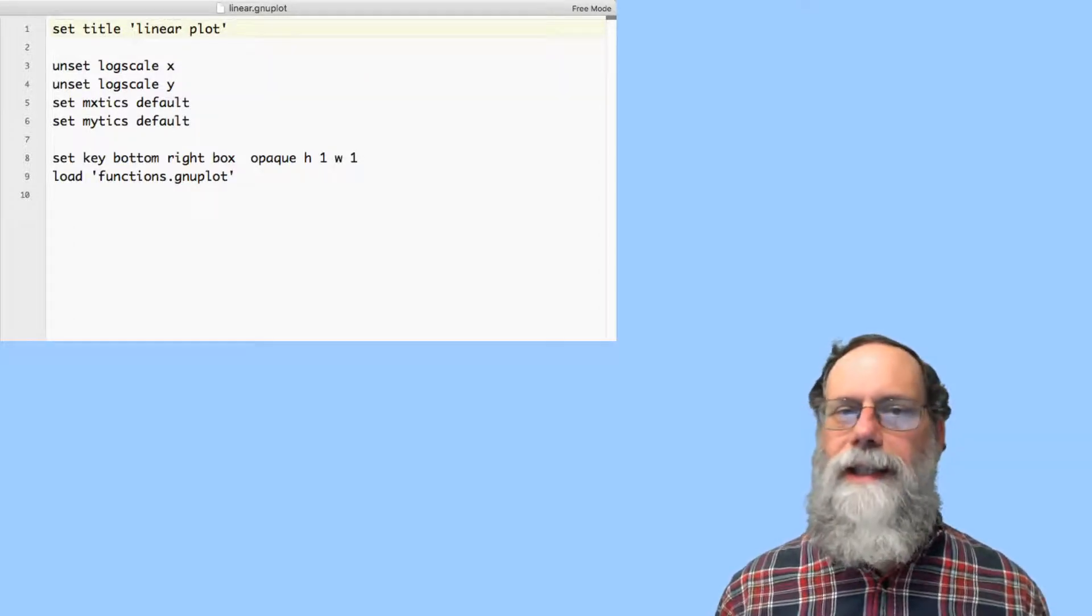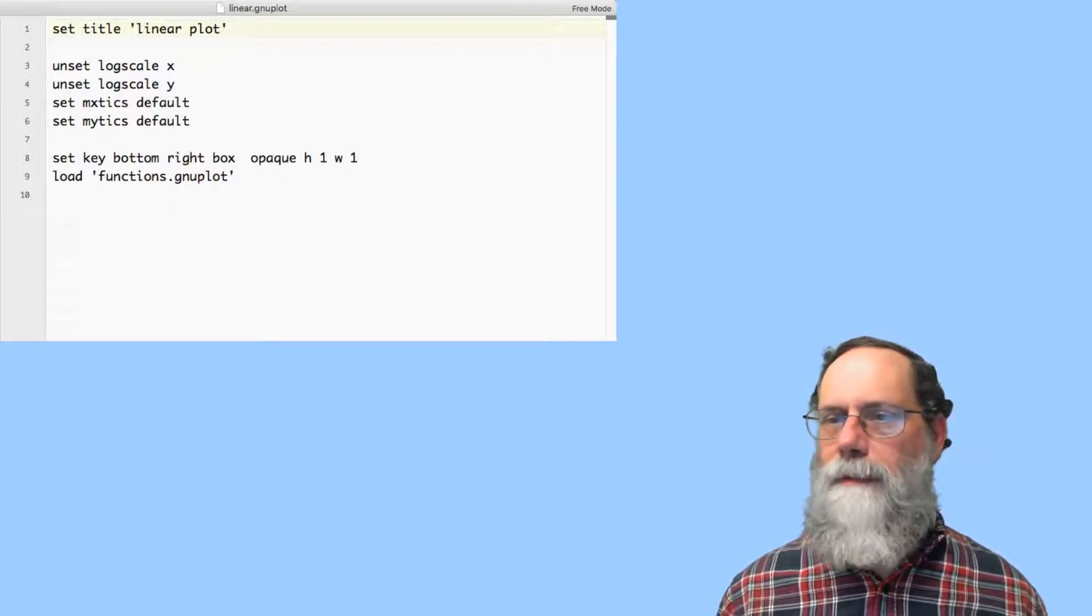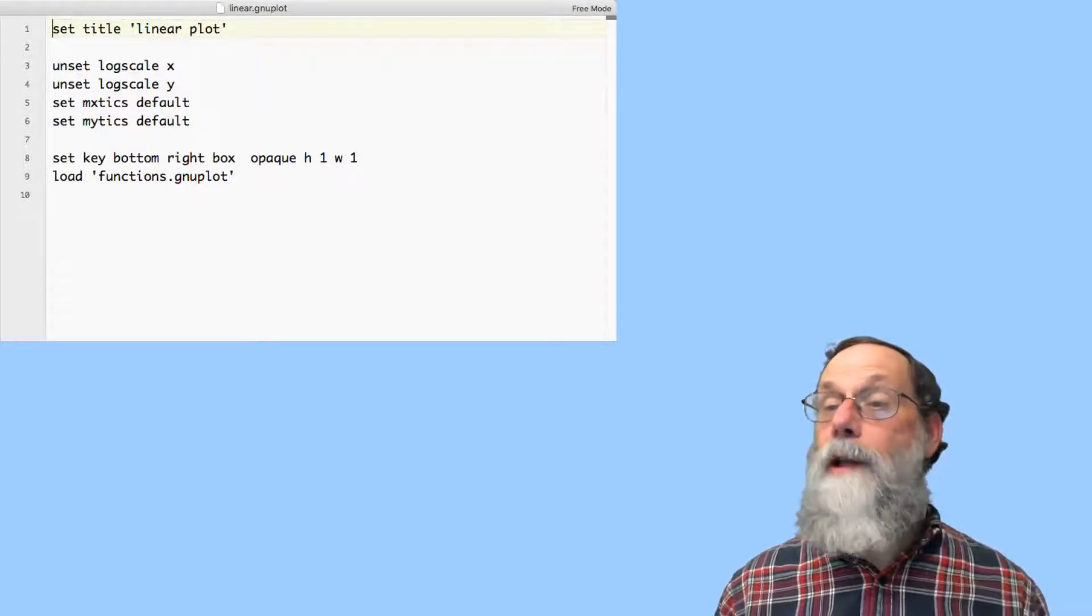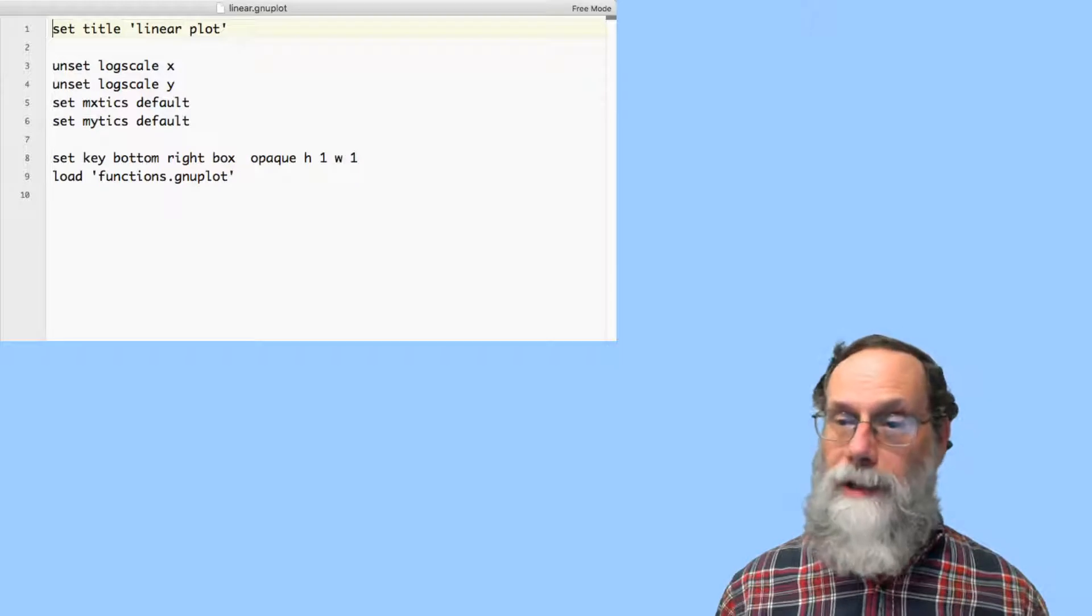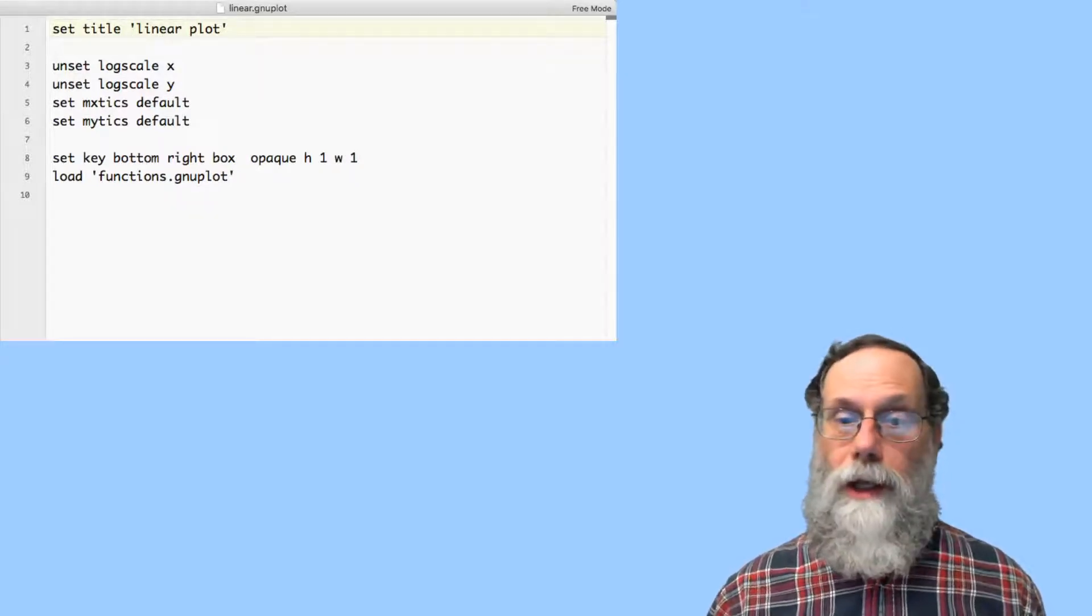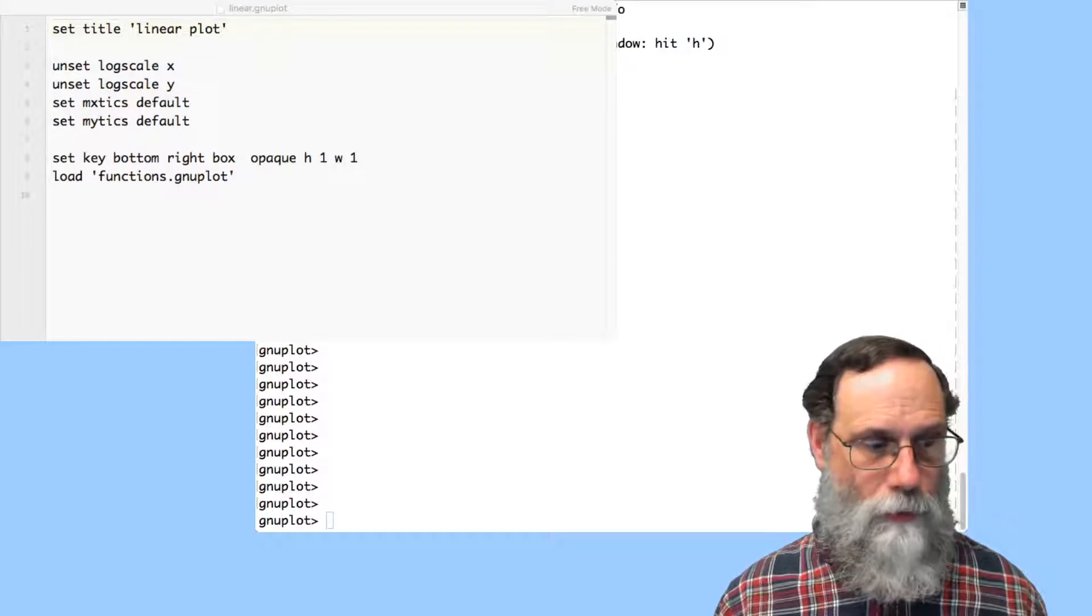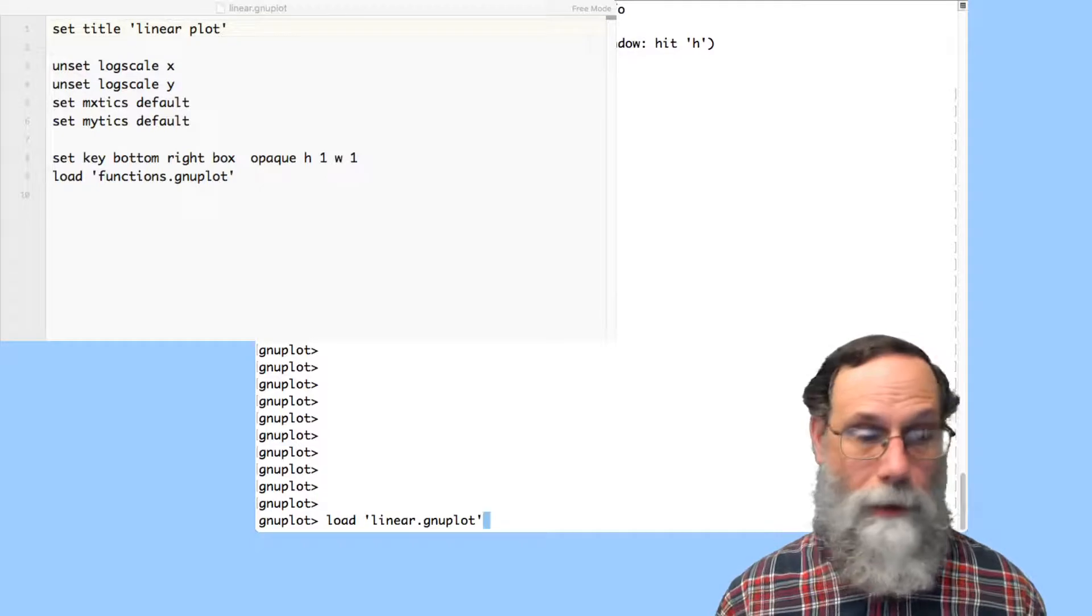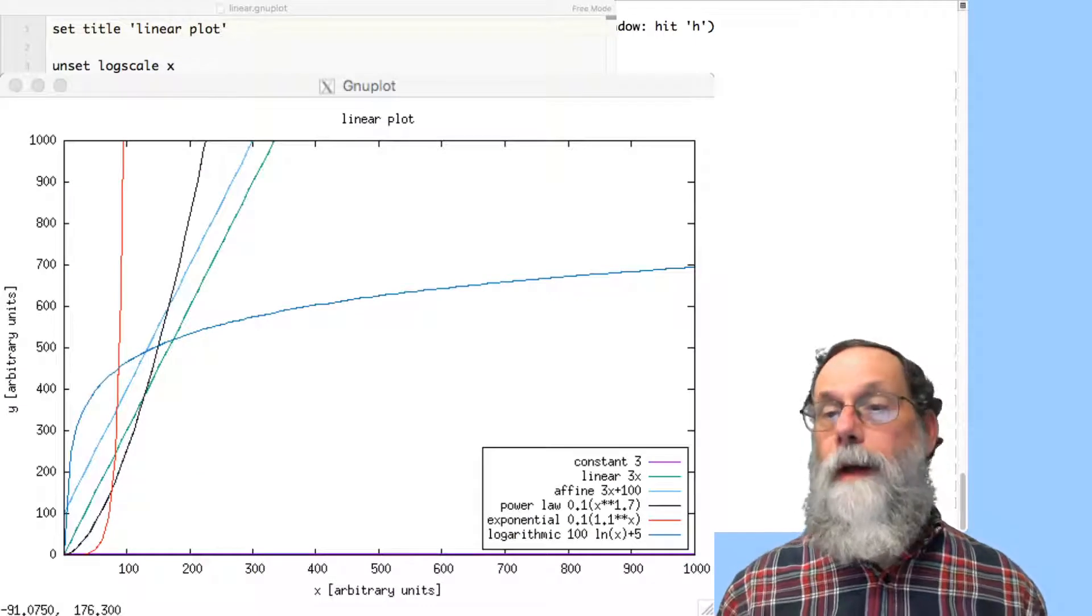And then I'm going to put a key, and I'll place it in a particular place on the plot, just so it doesn't interfere with too much of what's going on on the plot. So I may put it in different places and different plots. And then I'll load the functions.gnuplot that I've just shown you, which had the definition of the functions. And show you what that looks like.